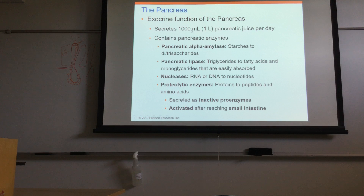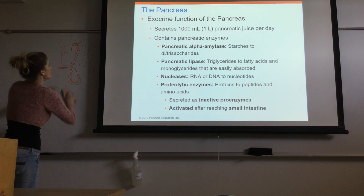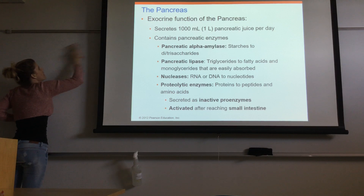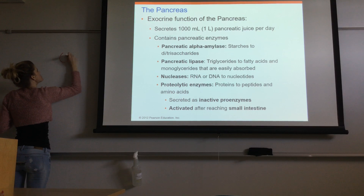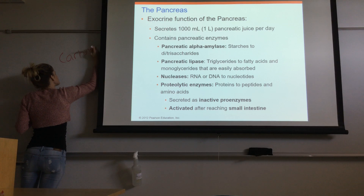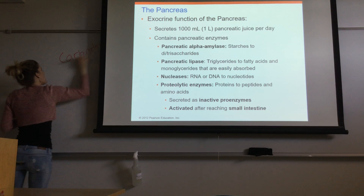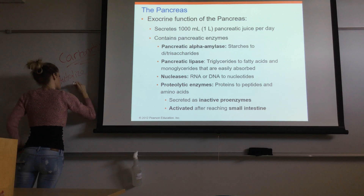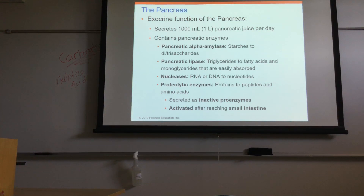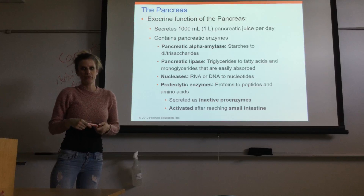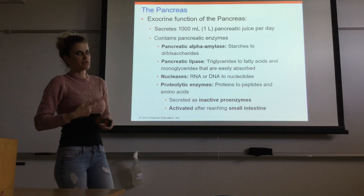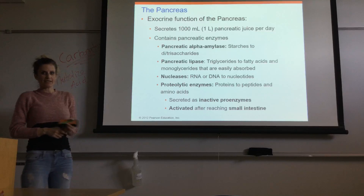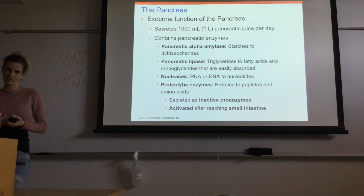Pancreatic juice also contains carbonates, which are very important because they neutralize acid. The chyme arriving from the stomach is acidic, and when it enters the duodenum, that acid must be neutralized quickly. Pancreatic juice is full of carbonates that neutralize the acid before the chyme moves on to the next sections of the small intestine.